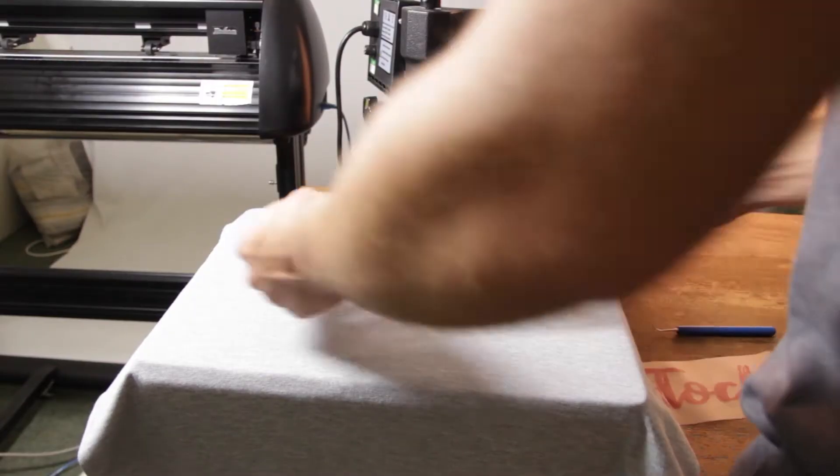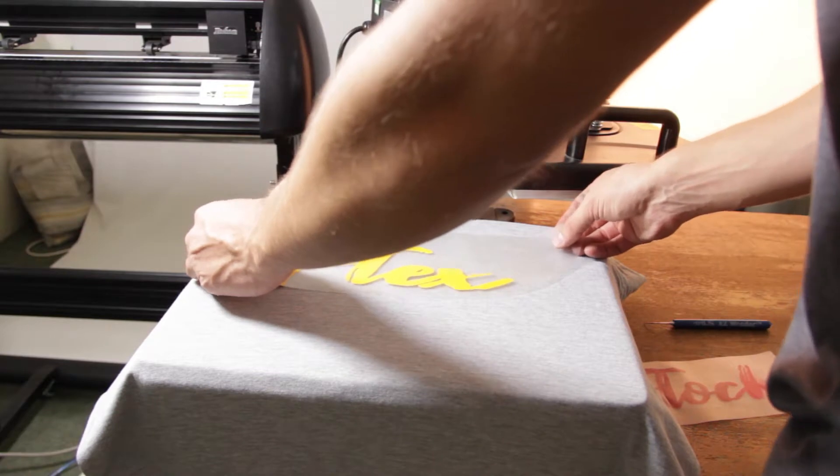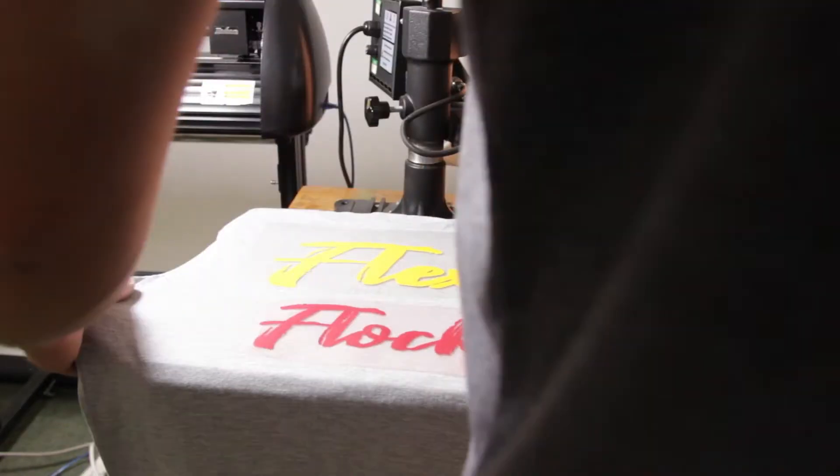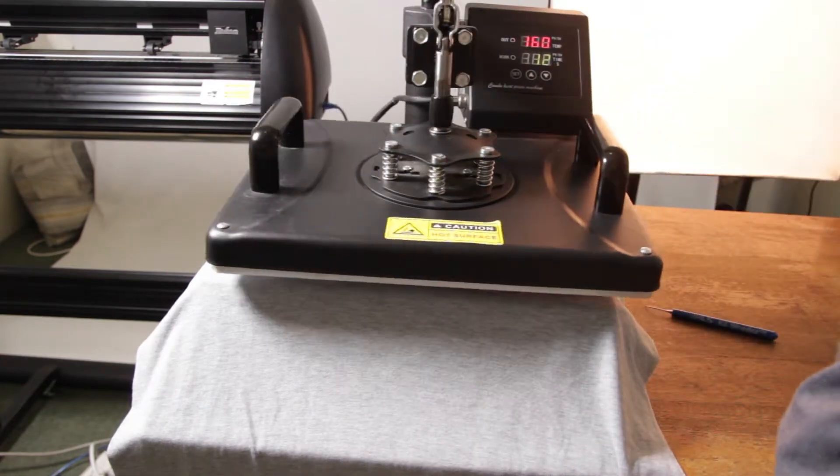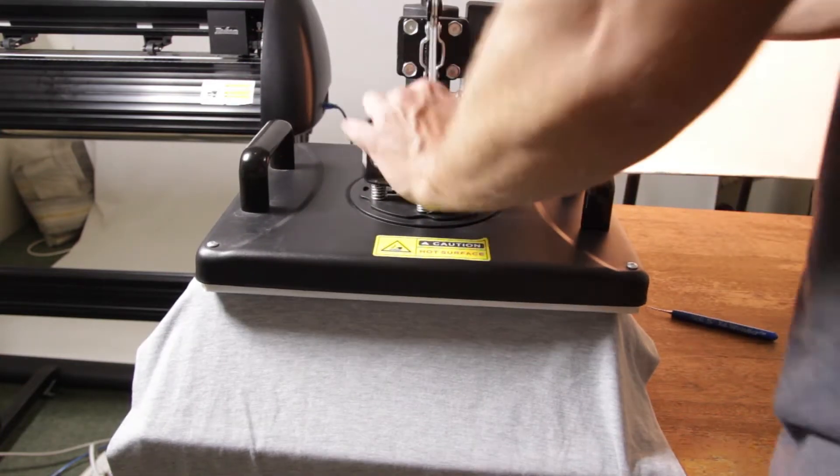Now place your designs on your shirt. Set your timer to the required time of the vinyl that you are using as well as the required temperature. Press down on the lever.